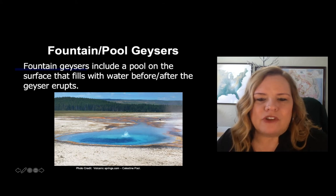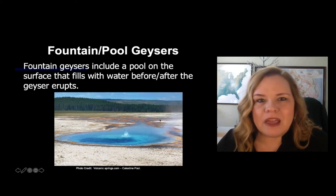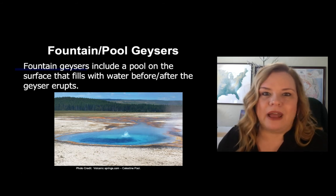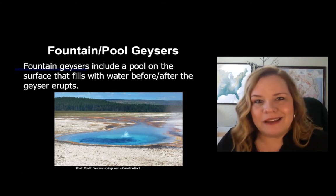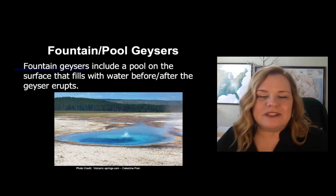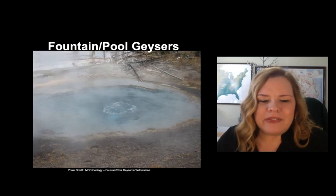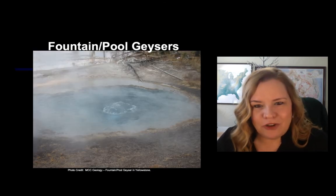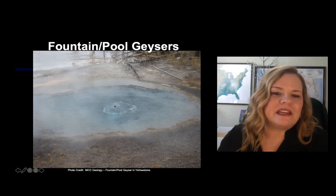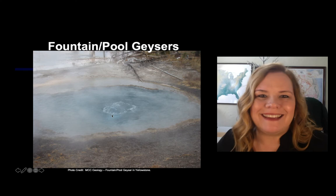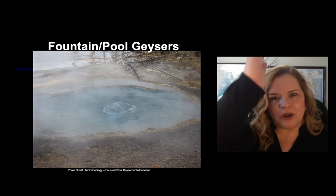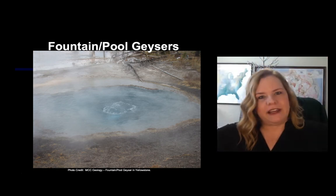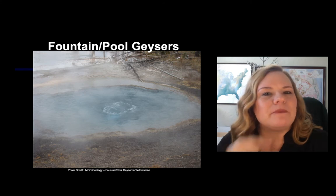Do you see how the water is running on the surface? That's super common. Fountain slash pool geysers spray in a more 360-degree fashion compared to cone geysers that shoot straight up, so you tend to get a lot of water runoff. This fountain slash pool geyser in Yellowstone is heating up and beginning its eruption process, pushing water up towards the surface.